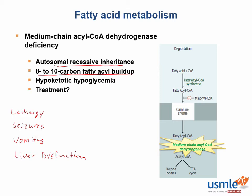How do you treat patients with medium-chain acyl-CoA dehydrogenase deficiency? We use beta-oxidation to break down fats when our glucose reserves are depleted. If this process isn't working correctly and we don't ever want it to take place, we need to prevent the need for beta-oxidation.